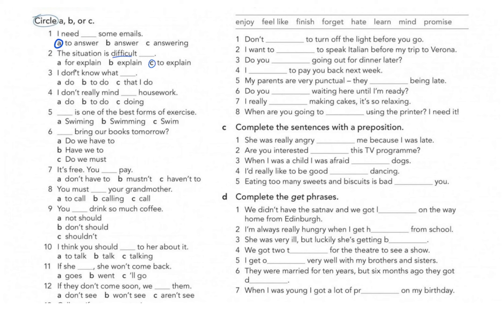Question three: 'I don't know what...' After question words like 'what', 'where', 'when', we also use 'to + infinitive', like 'I don't know what to do', 'I don't know where to go', 'I don't know when to start'. So we go for B as the answer.